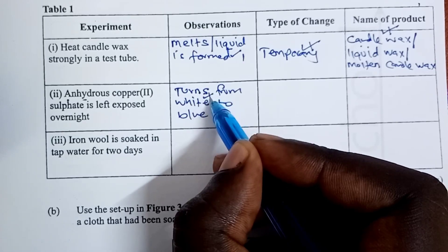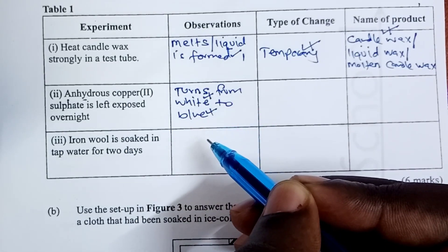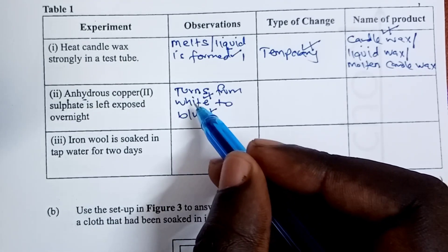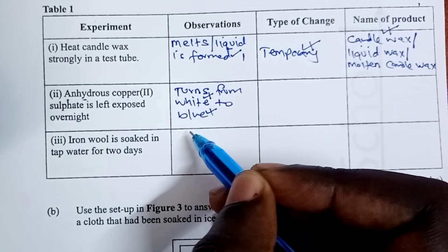The observations that we were able to take note of is that your anhydrous copper-2 sulfate turns from white to blue. Mentioning white half, mentioning blue half. You cannot get the mark for blue if you missed the mark for white, and vice versa.